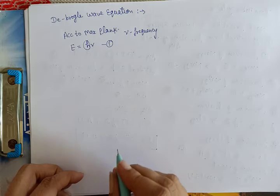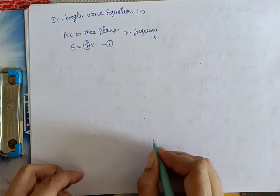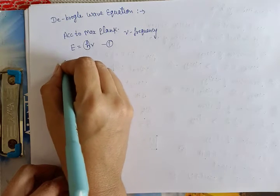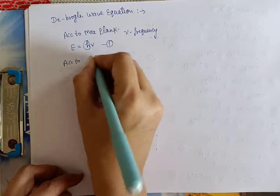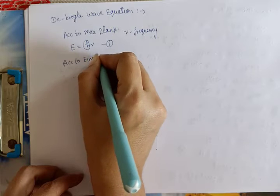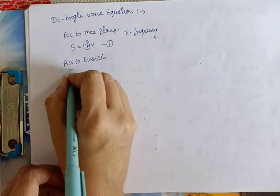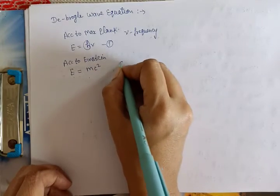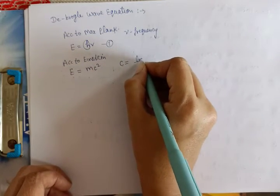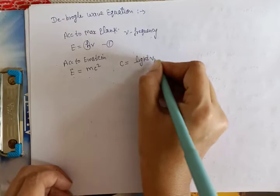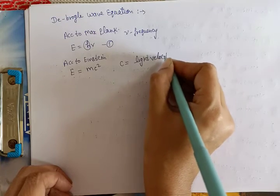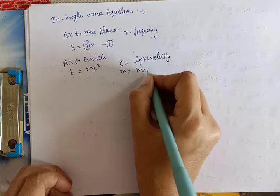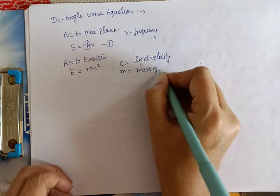جب یہ radiations particles کی طرح behave کرتی ہیں تو ان کے لیے Einstein نے ایک energy calculate کی تھی according to Einstein energy کی equation E equal to mc square جہاں c جو ہے وہ light velocity ہے اور m جو ہے وہ mass ہے light کا mass of light